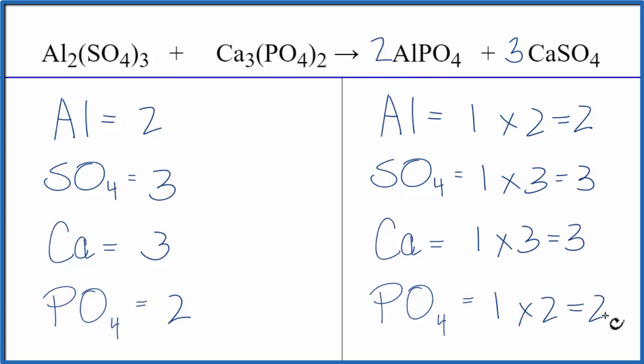So you can see the utility of counting the sulfate as one thing when it appears on both sides of the equation, or the phosphate. It makes it a lot easier to keep track of the atoms, and it's much less prone to error. This is Dr. B with the balanced equation for Al₂(SO₄)₃ plus Ca₃(PO₄)₂, aluminum sulfate plus calcium phosphate. Thanks for watching.